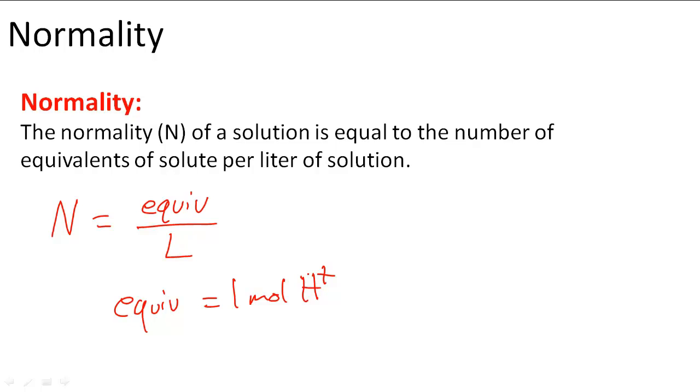For a base, it would be one that can furnish one mole of OH negative ion. Based on this, we can calculate the equivalents if we know the normality times liters.